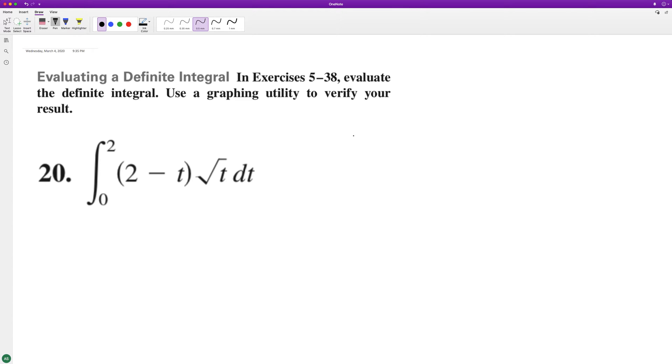First thing I do, let's just multiply 3 by the square root of t. So we end up with 2t. It's the same thing as t raised to the 1 half minus t raised to the 3 halves.